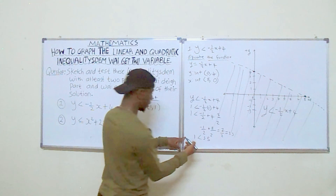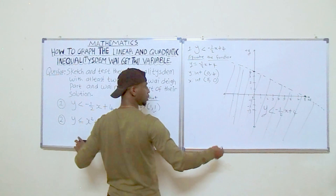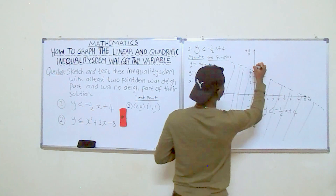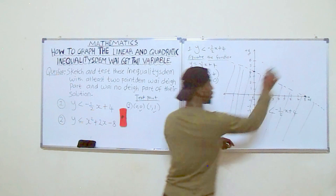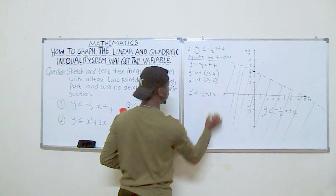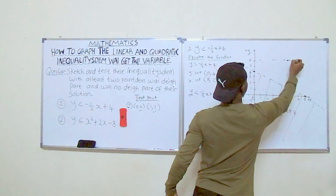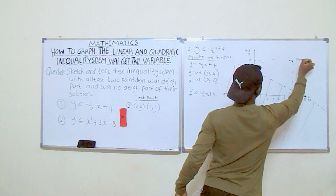Now we'll choose a point outside our region to show it does not satisfy the inequality. For instance, points like (5, 6) or (6, 6) are above our line and not part of the shaded region. Let's test (6, 6): y equals six, x equals six.